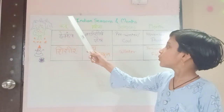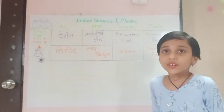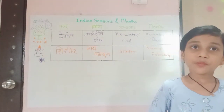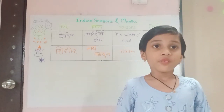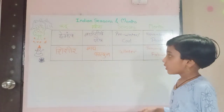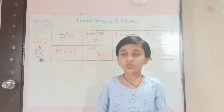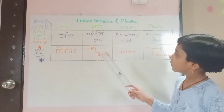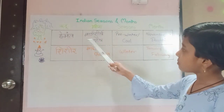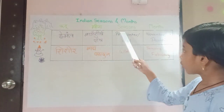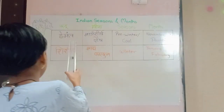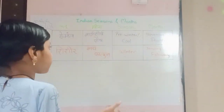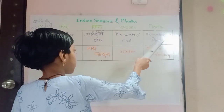Next Ritu is Hemanta. It's getting cold — it's the beginning of winter. Trees start to change their colour and shed their leaves. It falls in Mahina Margashirsha and Paush. The English name for Hemanta is Pre-Winter or Cool, which falls in November and December.